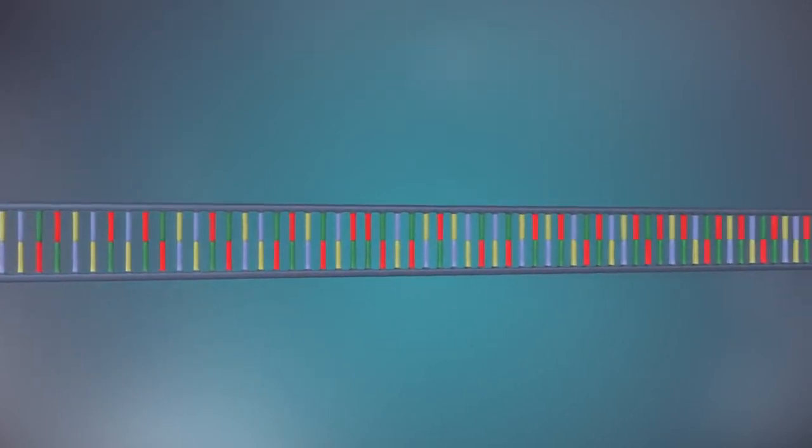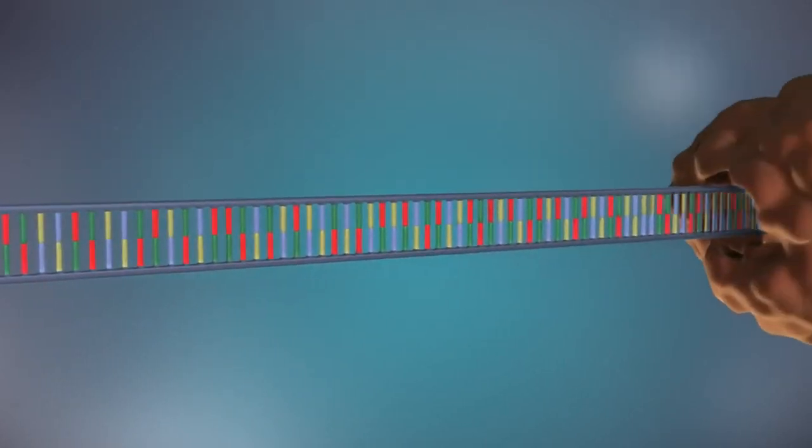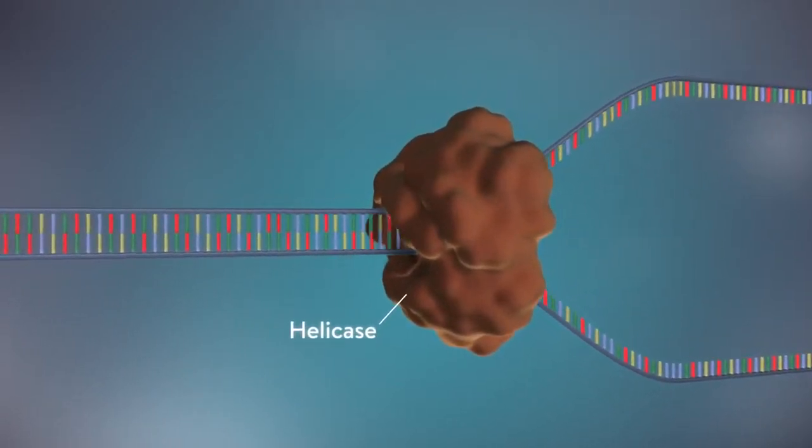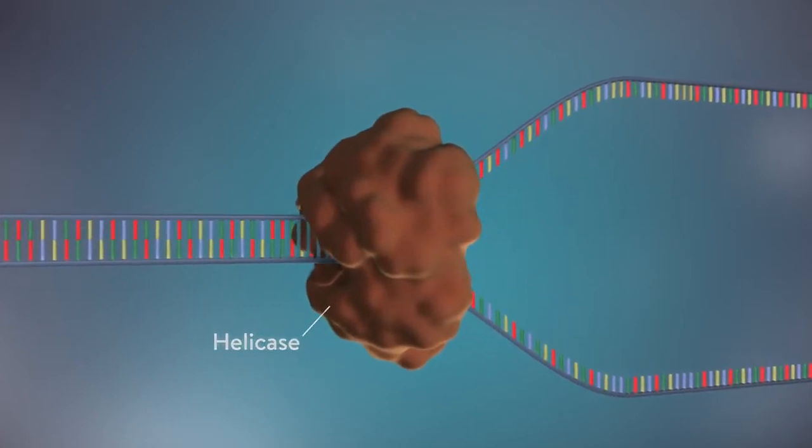The first step in DNA replication is to separate the two strands. This unzipping is done by an enzyme called helicase and results in the formation of a replication fork.